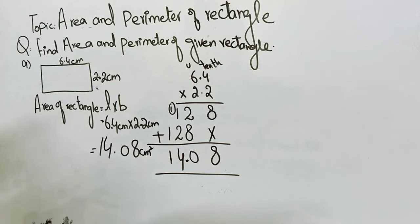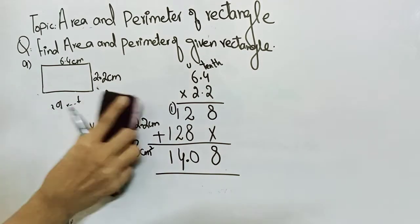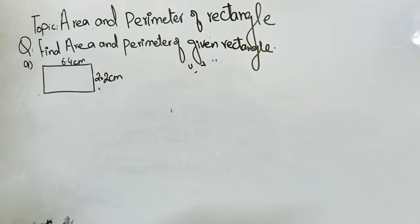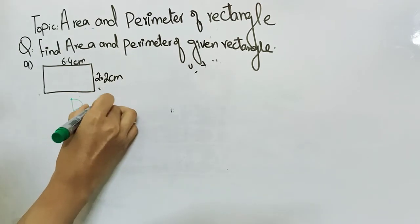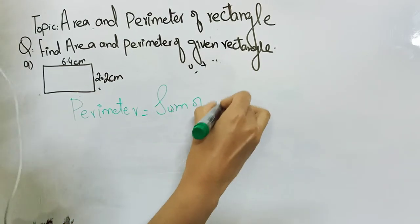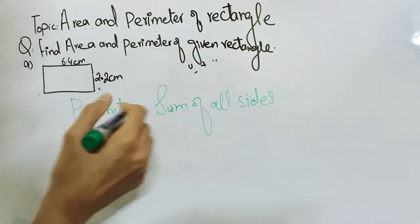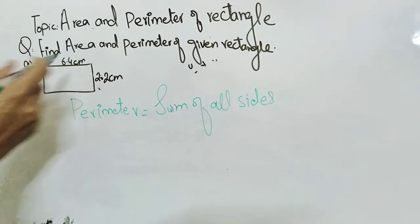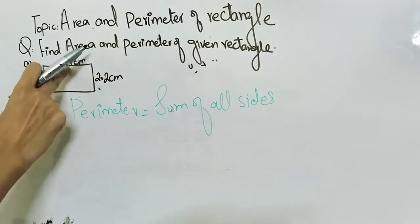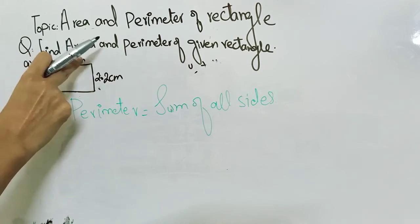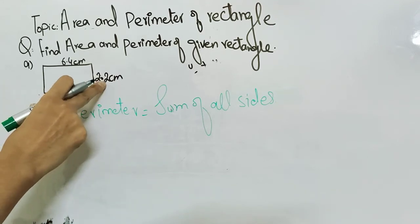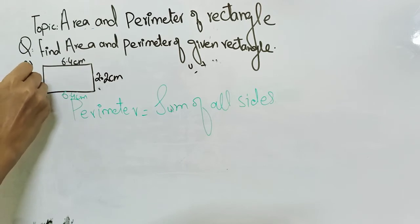Now it's time to find the perimeter of the rectangle. The perimeter is the sum of all sides. We have only two side values given, but in a rectangle two opposite sides are of equal length. So if one side is six point four centimeter, the opposite side is also six point four centimeter. If one side is two point two centimeter, the opposite side is also two point two centimeter.